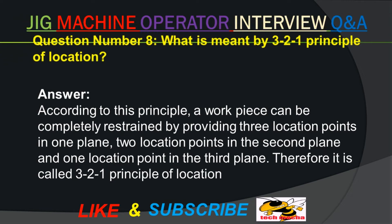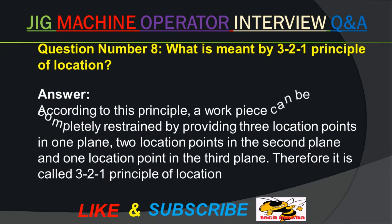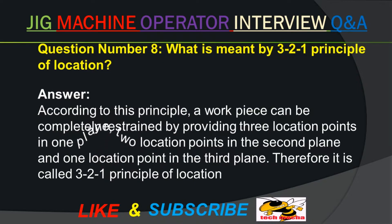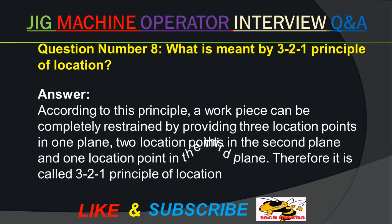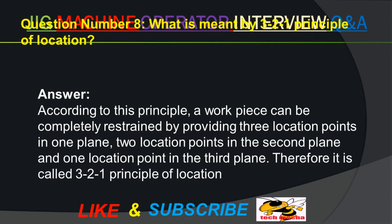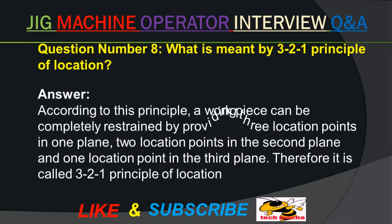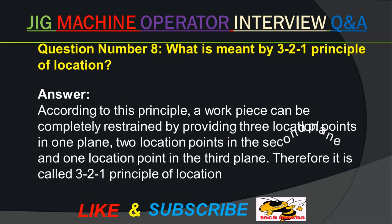Question number eight. What is meant by the 3-2-1 principle of location? Answer. According to this principle, a workpiece can be completely restrained by providing three location points in one plane, two location points in the second plane, and one location point in the third plane. Therefore, it is called the 3-2-1 principle of location.